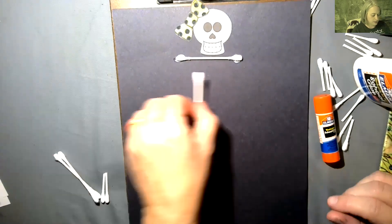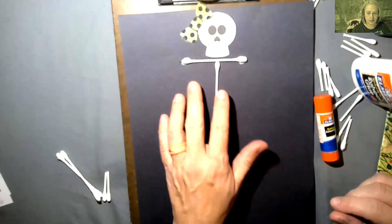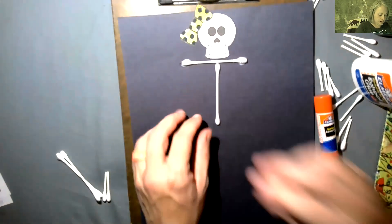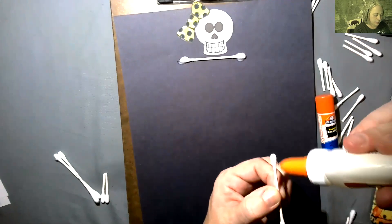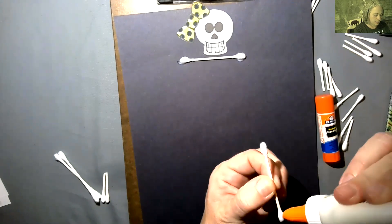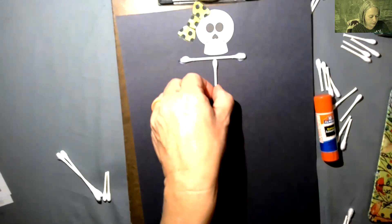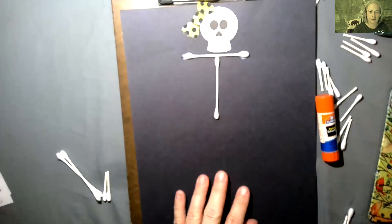Next thing is right in the middle we're going to put its backbone down, so you'll get another whole Q-tip, put the glue on either end and put it right in the middle going straight down.